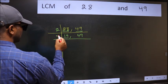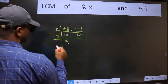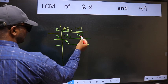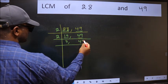Now here we have 14. 14 is 2 times 7 is 14. The other number 49 is not divisible by 2, so write it down as it is.